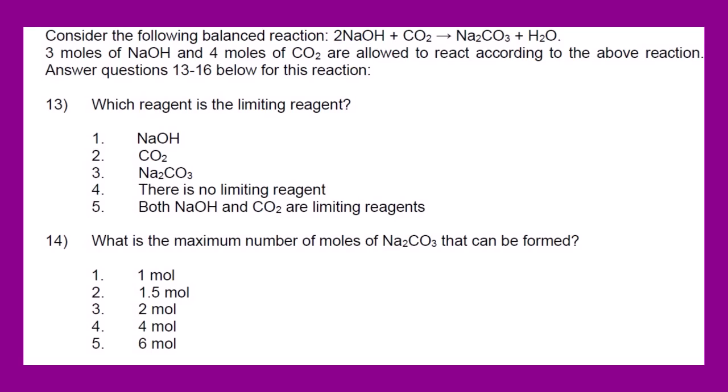Line up the reactants. Remember, between the two reactants is where we are going to find our limiting reagent — there is no way that a product can be the limiting reagent. The limiting reagent is that reagent used up completely to stop the reaction, meaning that in order to get more products we need both reactants. So if one is used up completely, the formation of products will eventually stop.